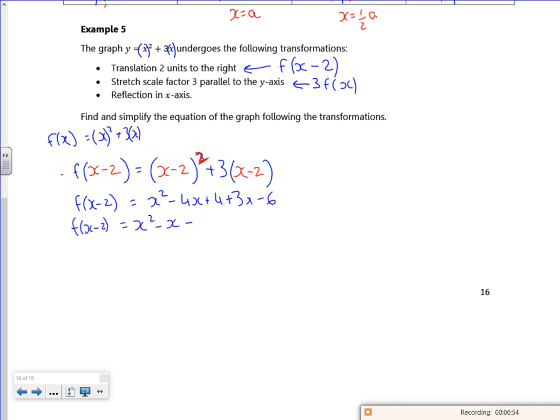So f of x minus two is x squared minus x minus two. The second bullet point is a stretch, so it's three f of x minus two. So it's three lots of x squared minus x minus two. So three lots of f of x minus two is three x squared minus three x minus six.